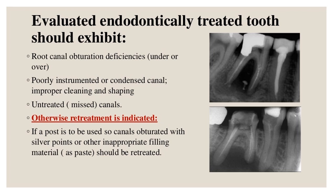There should be no evidence of active inflammatory disease and no radiographic signs of apical periodontitis. Root canal obturation deficiencies — under or over-fill, poorly instrumented or condensed canal, improper cleaning and shaping, untreated missed canals — indicate retreatment. If a post is to be used, canals obturated with silver points or other inappropriate filling materials such as paste should be retreated.